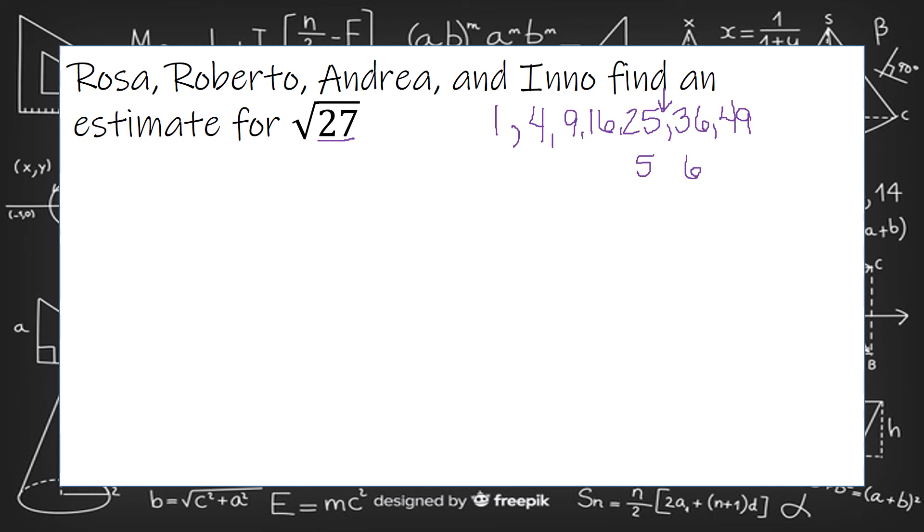So the estimate of the square root of 27 would be between 5 and 6. And 27 is closer to 25, so I would say it would be closer to 5.